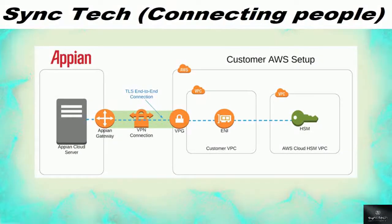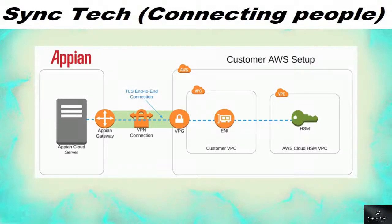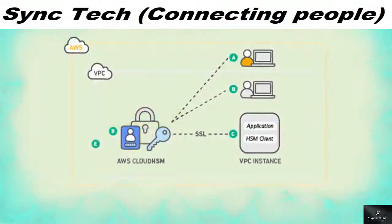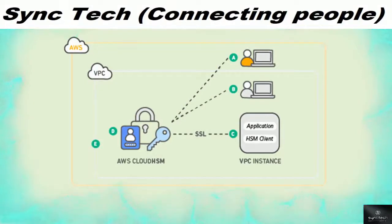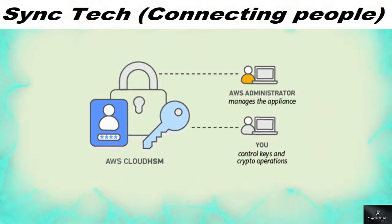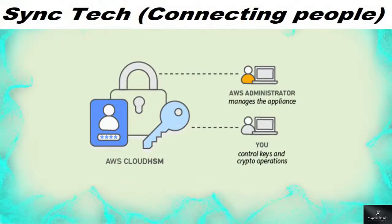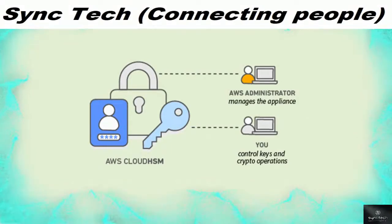You can also integrate Cloud HSM with different applications or cloud vendors such as Appian, SAP, and other tools. Integration with VMware Cloud is also possible. In this model, a person controls the keys and crypto operations while an AWS administrator manages the hardware appliances and DevOps tooling.